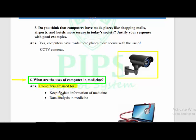Computers are used for keeping data and information of medicine — medicine ki information record karne aur save karne ke liye istamal hote hain. Data analysis in medicine is also done through computers. Analysis is a method that is used to divide complex criteria into smaller parts.